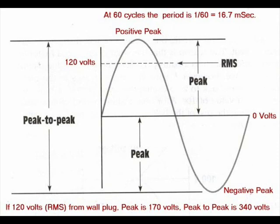So in a time of 16.7 milliseconds or thousandths of a second, an AC sine wave out of your wall socket will swing 340 volts peak to peak, and it will do this 60 times a second.